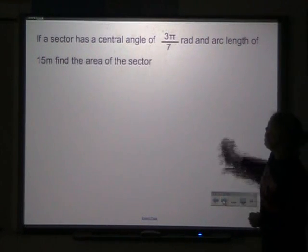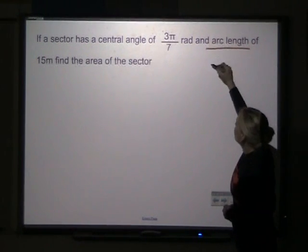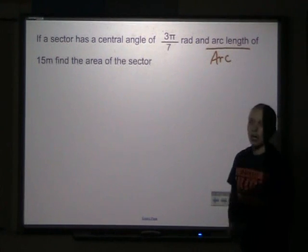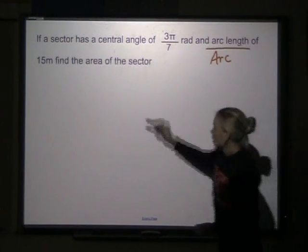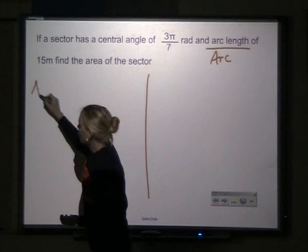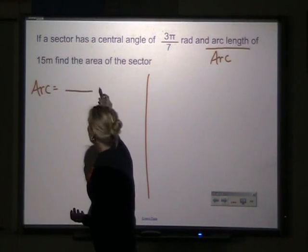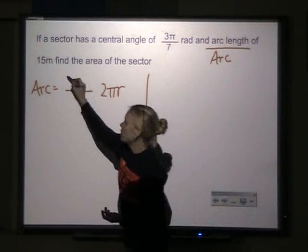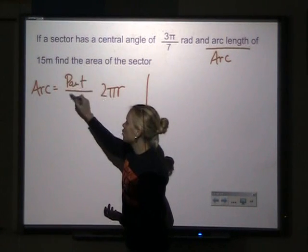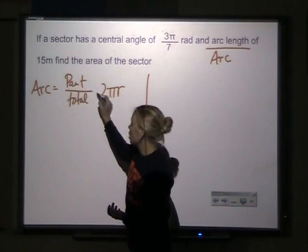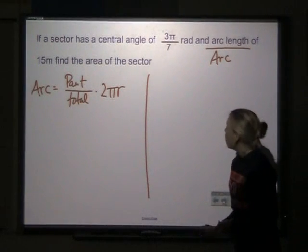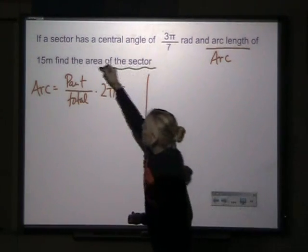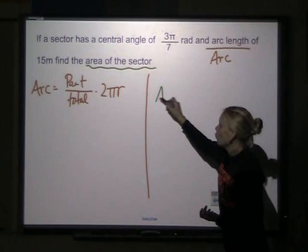Well, in this problem, I'm given the arc length, so I'm going to use the arc length formula. So arc is only part of the circumference. I have to figure out what part out of the total it is, what fraction it is, but I'm asked to find the area. That's a completely different formula.